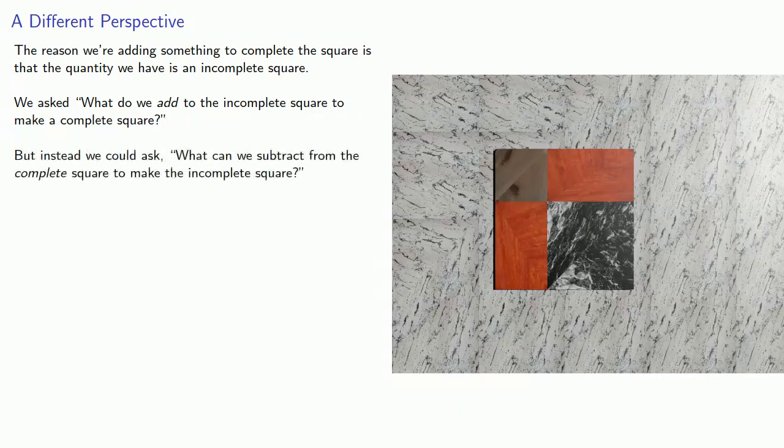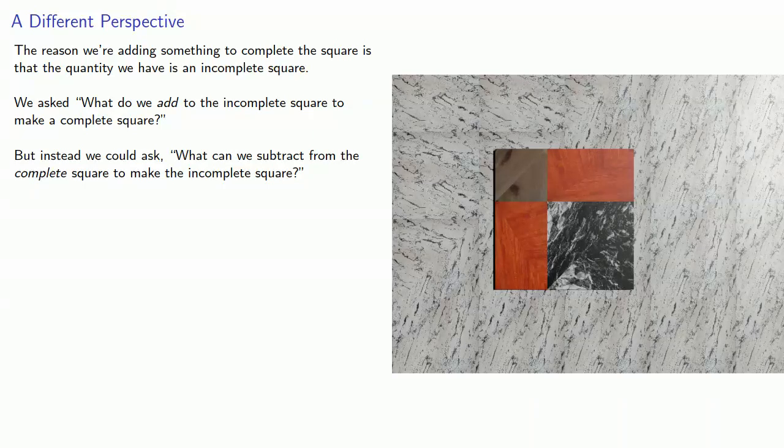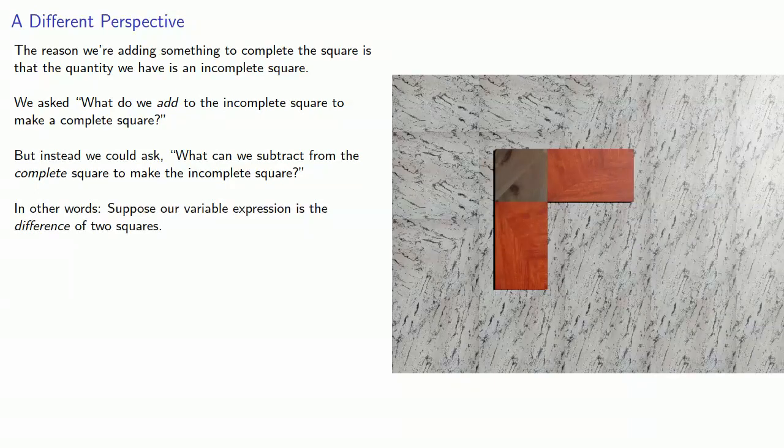What if we asked, what could we subtract from the complete square to make an incomplete square? In other words, suppose our variable expression is the difference of two squares.